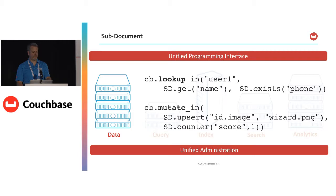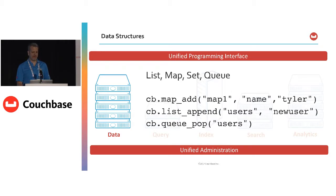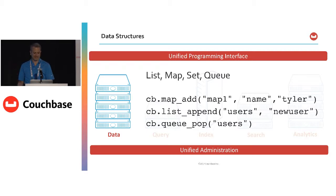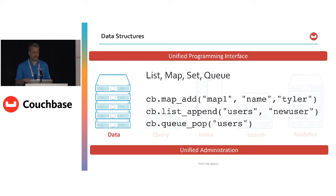Sub-documents were introduced in 4.5, and in 4.6 we introduced data structure support. This is for when you want the Couchbase library to manage your document for you — you can create a list or a map object as your document and interact with it using the native programming language's capabilities for lists and collections. The Java collection framework and .NET collections are supported. You specify a document and add a mapping, like name equals Tyler, and it handles it behind the scenes, built on top of sub-document capabilities.